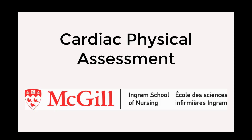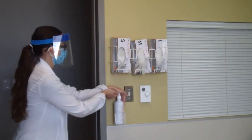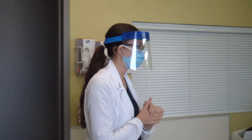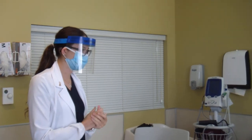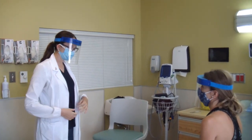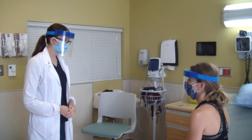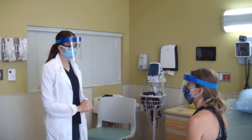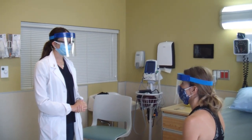Today we will be going through a full cardiac and peripheral vascular system assessment. Perform hand hygiene before entering the patient's room. Introduce yourself and ask for your patient's full name and date of birth. If in a hospital setting, verify the accuracy of this information with the patient's ID bracelet. If in a clinic setting where no bracelet is present, make sure the information the patient gives you matches previous documentation.